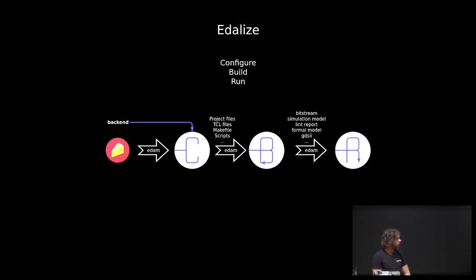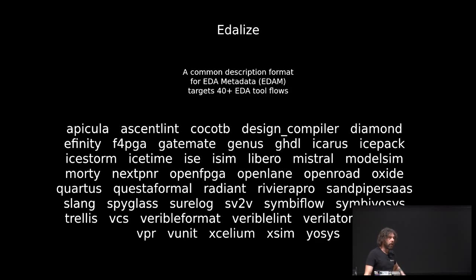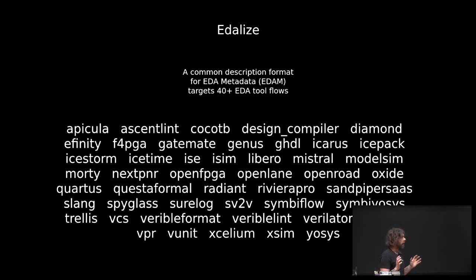Finally, we have the run stage, which means different things in different flows. For an FPGA flow, that typically means uploading the image to a board; for a simulation, it's running a simulation; and for a formal verification tool, it basically doesn't do anything. It's coarse-grained, and that's by design, because we support a lot of different tools and it's hard to find a common denominator. We just say there's a single step called build, but the backends are free to implement their own sub-steps. For example, if you have an FPGA flow, you can tell it to only do synthesis and then stop after that.